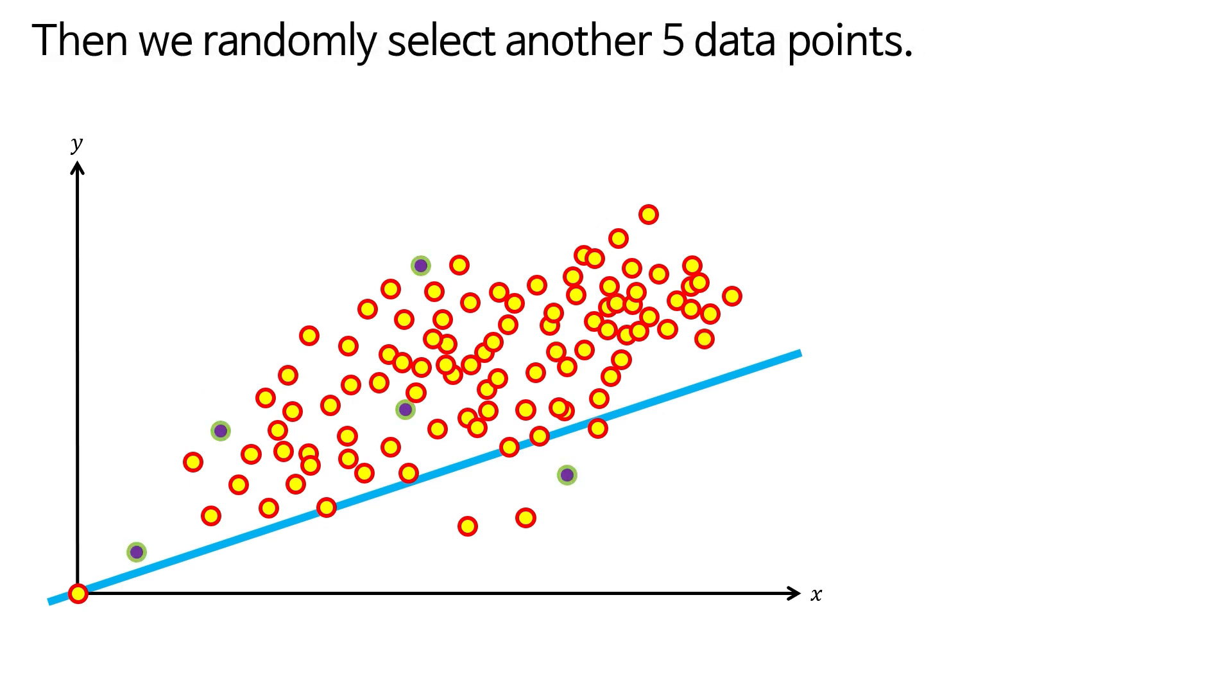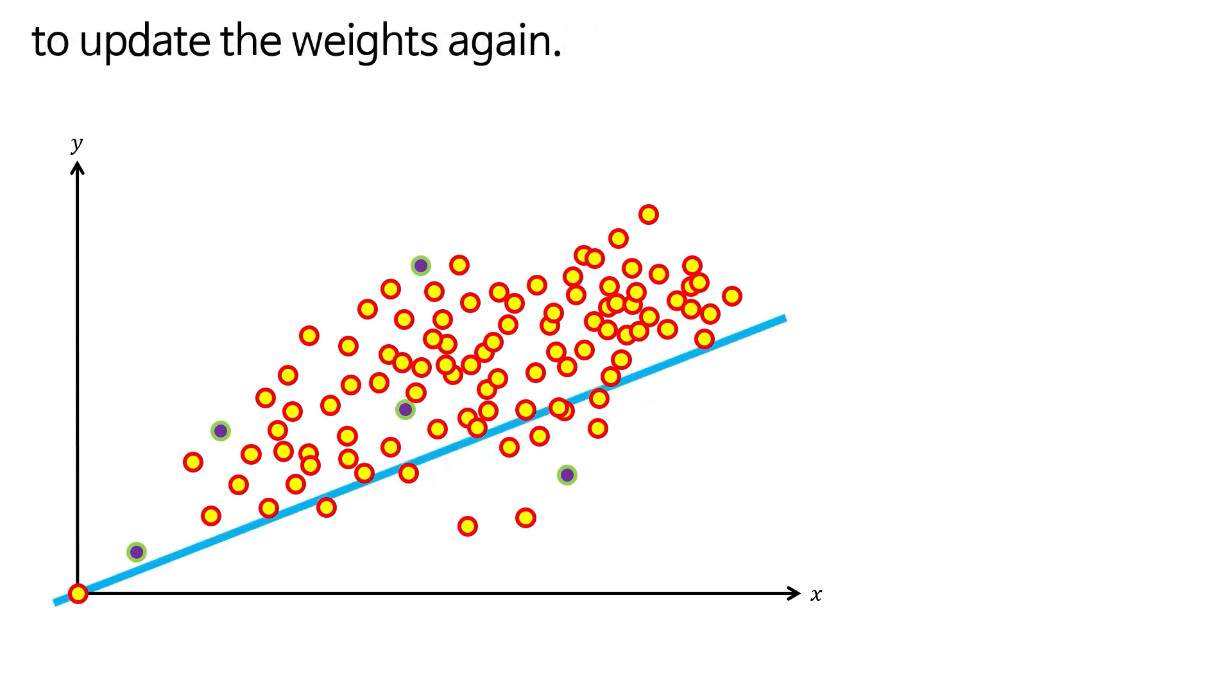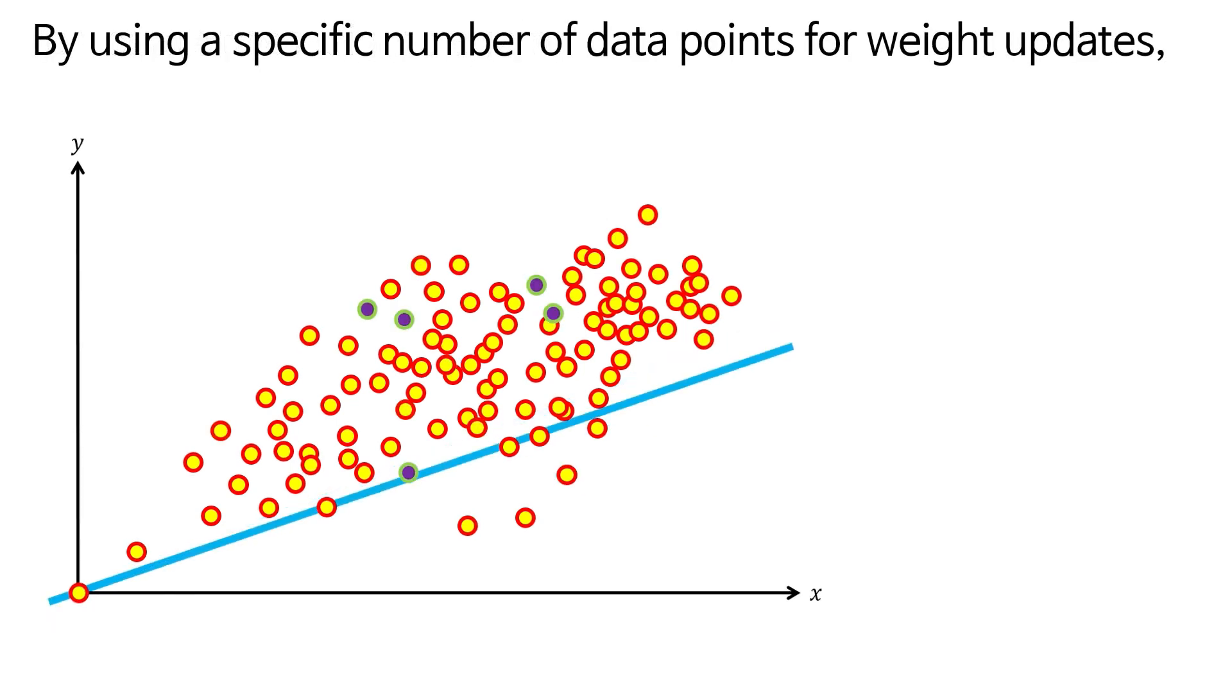Then we randomly select another 5 data points. We use the average error of these 5 points to update the weights again. By using a specific number of data points for weight updates,